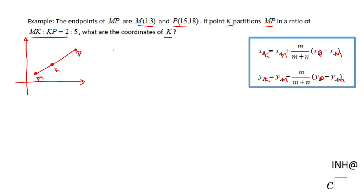So what do we get here? We're going to have XK equals XM, which is 1, plus—now what is m and what is n? These two is m and these five is n, so I have 2 over 2 plus 5, which is 7. And then I have XP, which is 15, minus XM, which is 1. So we just replace the values in the formula.